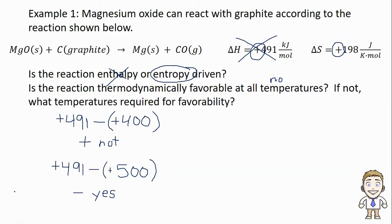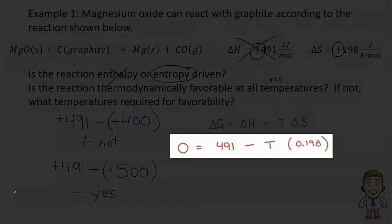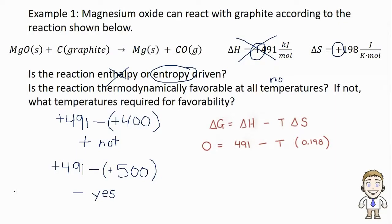Now we can answer the third and final question which says if not, what temperatures are required for favorability? We'll go back to the delta H minus T delta S equation one last time except now plugging in zero for delta G because zero is the delta G value where it switches from negative to positive or spontaneous to not spontaneous. Plugging in that zero, solving for the temperature value gives me 2480 Kelvin or higher to make sure that that T delta S is bigger than the delta H or to make sure that we get a favorable reaction with a negative delta G sign.